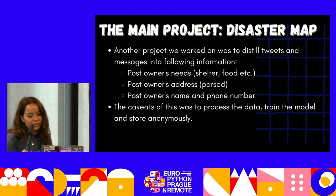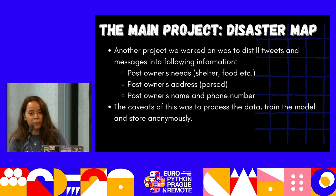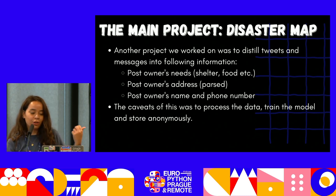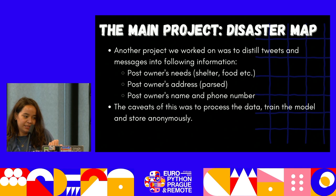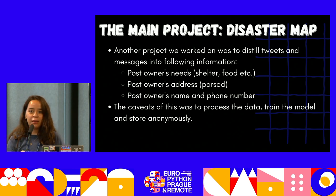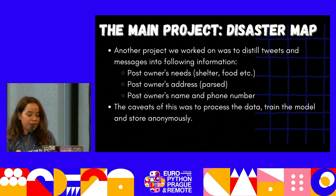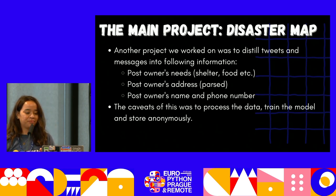We were first asked to distill tweets and messages into the following structured information: post owner's needs, post owner's address in a structured manner to pass to Google's GIS API, and the post owner's name and phone number.